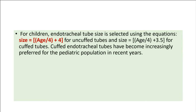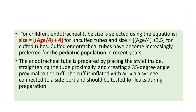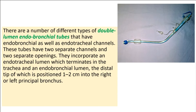Cuffed endotracheal tubes have become increasingly preferred for the pediatric population in recent years. The endotracheal tube is prepared by placing the stylet inside, straightening the tube proximally, and creating a 35-degree angle proximal to the cuff. The cuff is inflated with air via a syringe connected to a side port and should be tested for leaks. There are a number of different types of double-lumen endobronchial tubes that incorporate an endotracheal lumen terminating in the trachea and an endobronchial lumen, the distal tip of which is positioned 1–2 cm into the right or left principal bronchus.